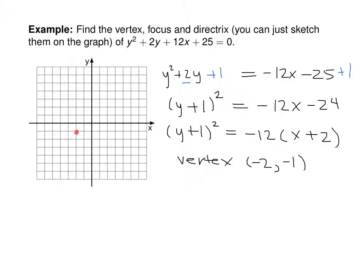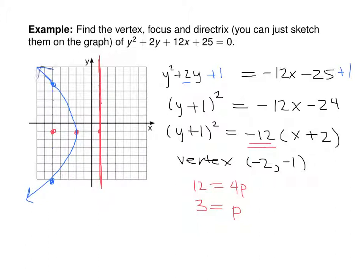We have that 12 = 4p, so 3 = p. The focus is a distance of 3 away from the vertex, and the directrix is a distance of 3 away. Because we have this negative, our parabola is going to open to the left, which means this is the directrix. Because p is 3, we know the latus rectum points are 6 away, giving us the shape of the parabola.